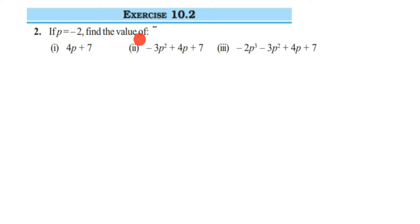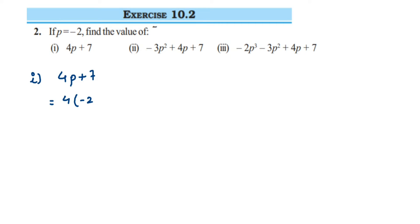We have to substitute the value p = minus 2 in the given expression and get the value of it. So here is the first question. It is 4p + 7. Substitute p value equal to minus 2. So in place of p, I am going to put minus 2, plus 7.